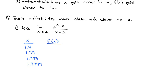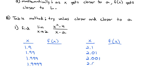An important part of a limit is it has to work on both sides. We can't just do values smaller than 2; we also need values for x that are a little bit bigger than 2. So we'll try 2.1, 2.01, 2.001, and 2.0001.